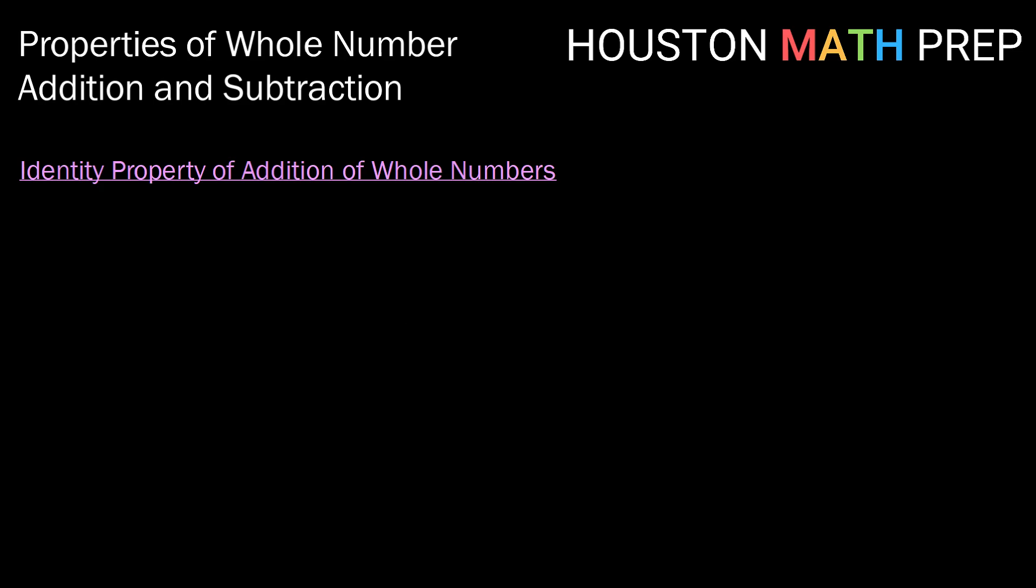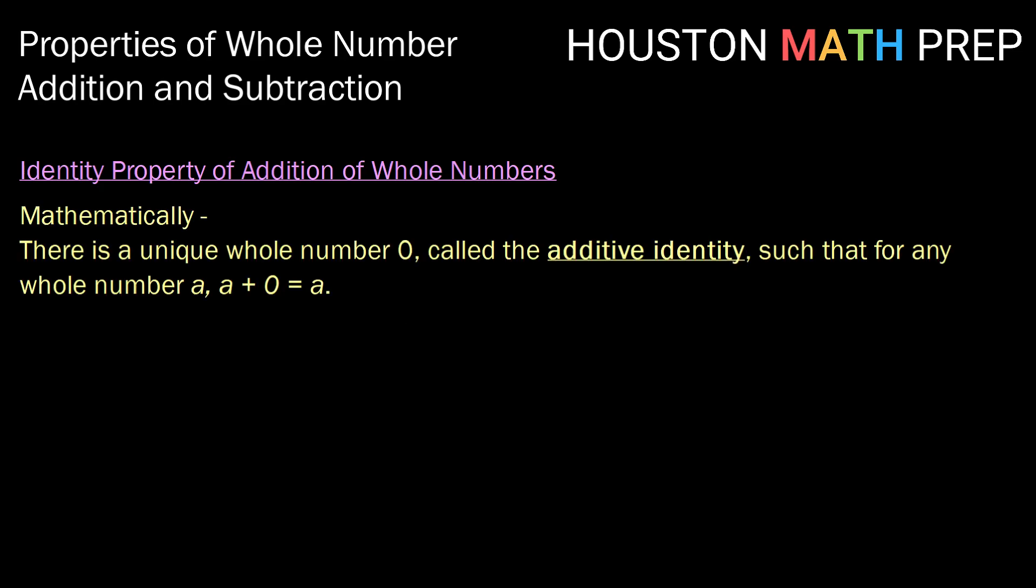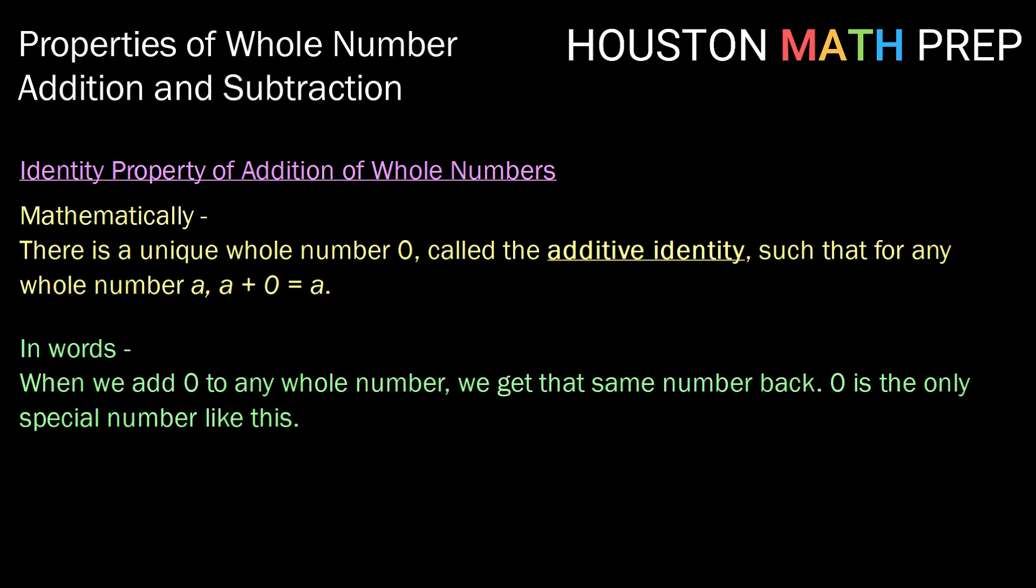Now, our final property for addition of whole numbers is the identity property. So mathematically, there is a unique whole number 0, which we call the additive identity, such that for any whole number a, a plus 0 equals a. Saying that a little bit more simply, we could say, when we add 0 to any whole number, we get that same number back. And 0 is the only special number that works like that.